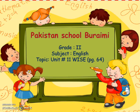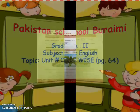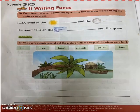Today in English class, we are going to complete our unit, that is unit number 11, and do the exercise given on page number 64. So open your books, page number 64. Write down the date. The date is 29th November and the day is Sunday.